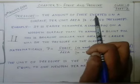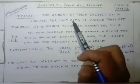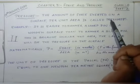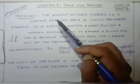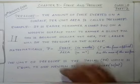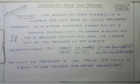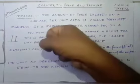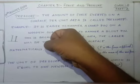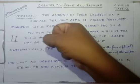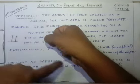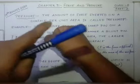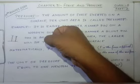The amount of force exerted on a surface per unit area is called pressure, and it is denoted by capital letter P. Suppose there is a wall and I am going to apply a force on it. The amount of force applied by my hand is 100 Newtons, and the area which my hand covers will give you the pressure.